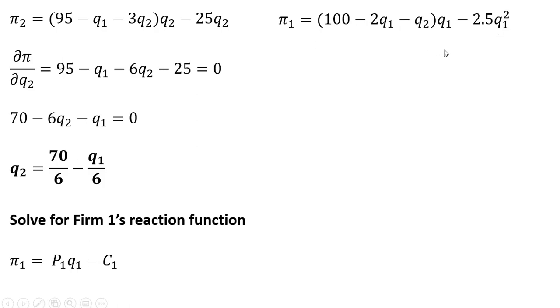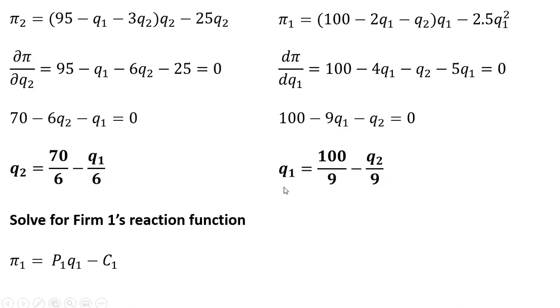Now we're going to take the partial derivative of this with respect to firm 1's output, which is Q subscript 1. We get back this partial derivative result, setting these partial derivatives equal to 0 because we're maximizing. And now we're going to solve this for Q subscript 1. This minus 4Q subscript 1 minus 5Q subscript 1 gives us minus 9Q subscript 1. And now dividing through by 9, this is firm 1's reaction function.